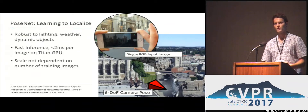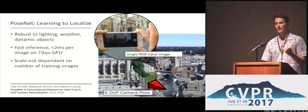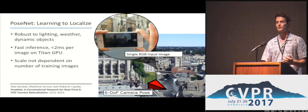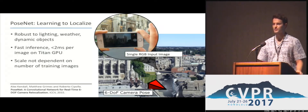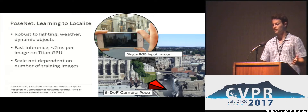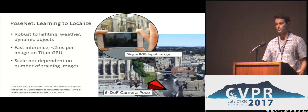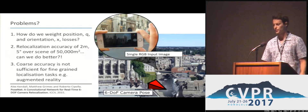The advantage of this model is that because it uses deep learning features, it's able to capture context and be more robust to environmental changes like lighting, working in situations where point-based SIFT registration will fail. It's also very fast, only taking a few milliseconds per image for inference, and scales well — when you get more training data, the size of the network remains constant, unlike SIFT-based structure-from-motion models.